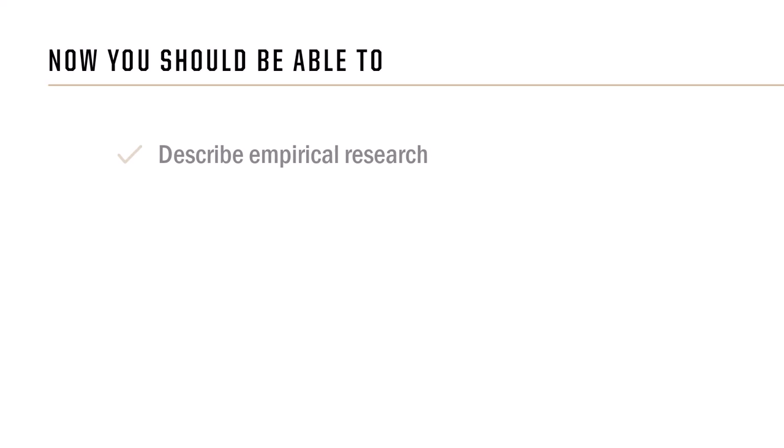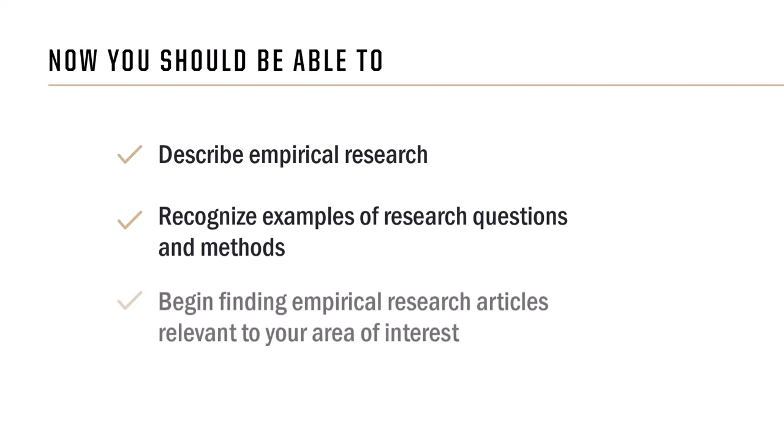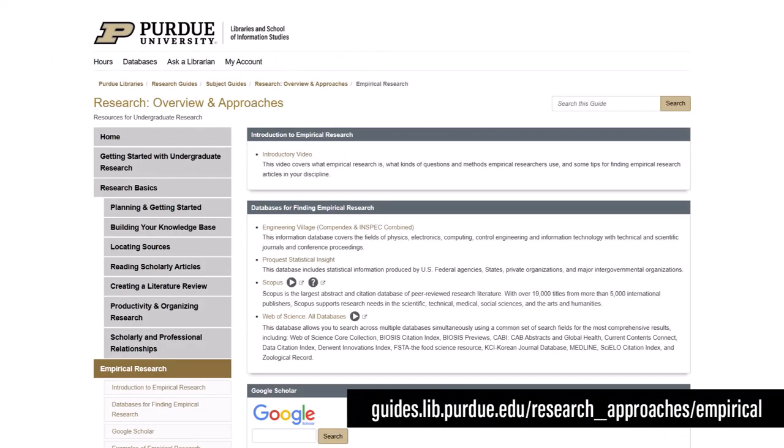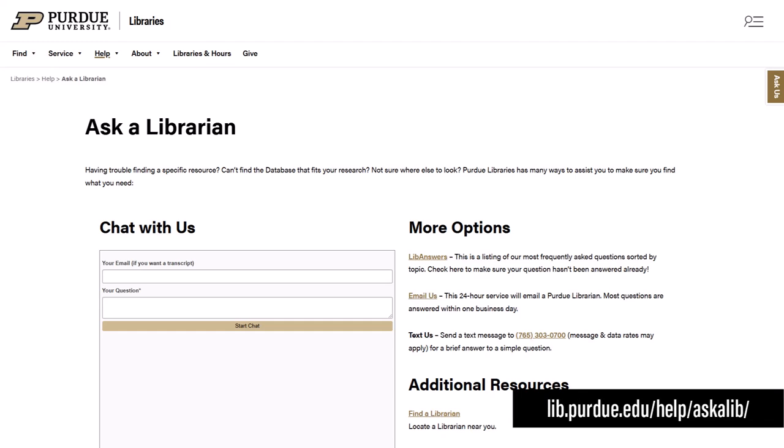Now you should be able to describe empirical research, recognize examples of empirical research questions and methods, and begin finding articles relevant to your area of interest that employ an empirical approach. For additional resources, check out the library research guide page on empirical research. If you have any questions, contact the libraries via our digital chat service Ask a Librarian.